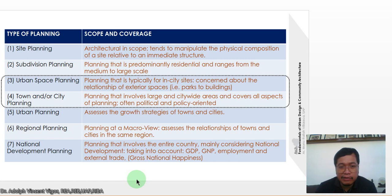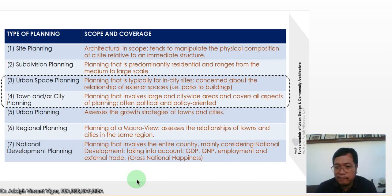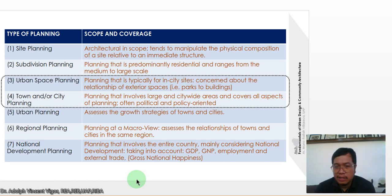Regional planning takes a macro view and assesses the relationships of towns and cities within the same region. National development planning involves the entire country, mainly considering national development and taking into account GDP, GNP, employment, and external trade.